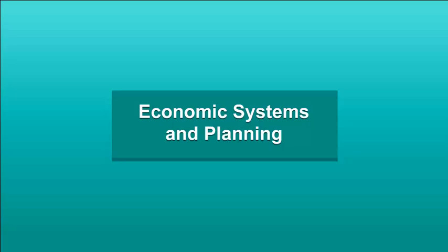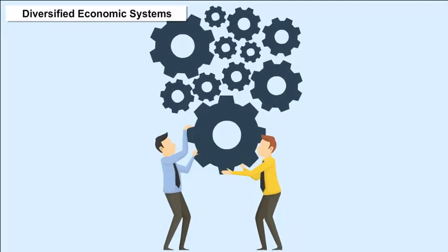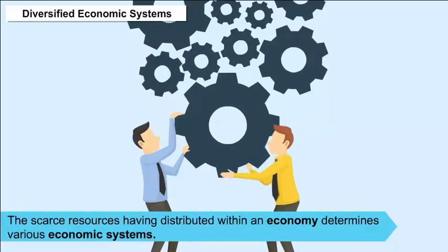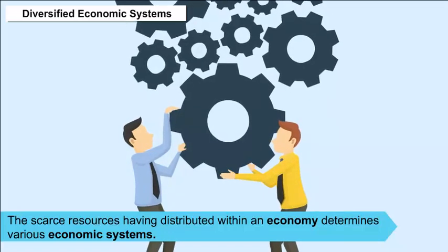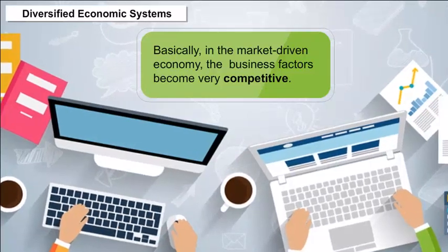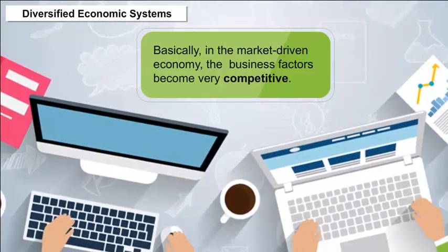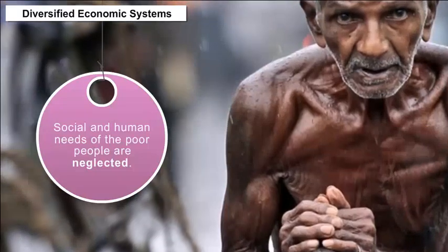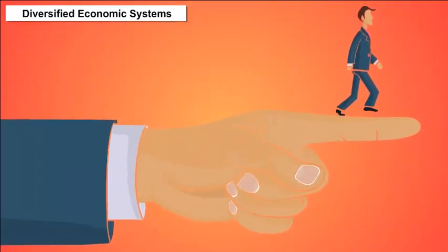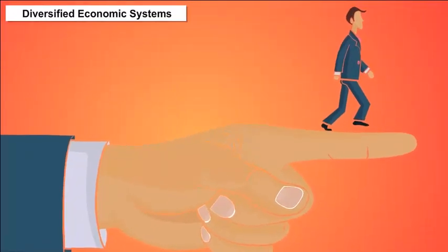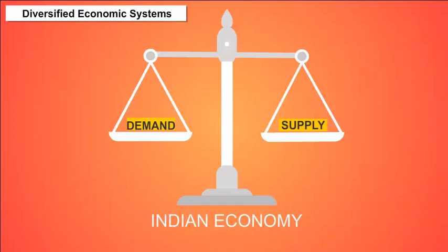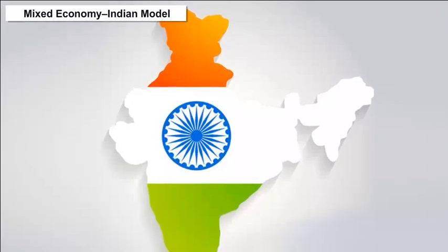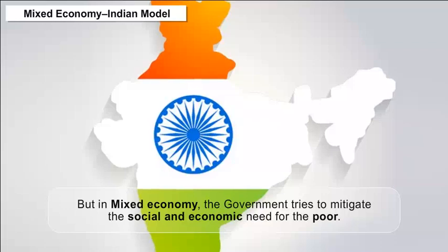Economic systems and planning: Scarce resources distributed within an economy determine various economic systems. In the market-driven economy, business factors become very competitive and thus the social and human needs of the poor are neglected. In the command economy, while the government owns the means of resources, it lacks the ability to maintain the supply and demand cycle in a natural way.